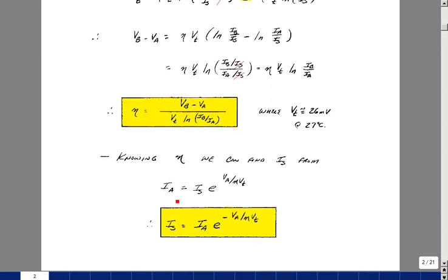Once I know eta, I can then go back to the Shockley equation for maybe the first or the second data point, and then evaluate the value of I sub s. Because I know this, I know this, and now I know the value of eta, and V sub t at a specific temperature. So now I could extract the value of I sub s by just dividing by this term.